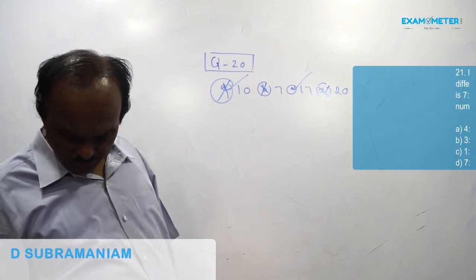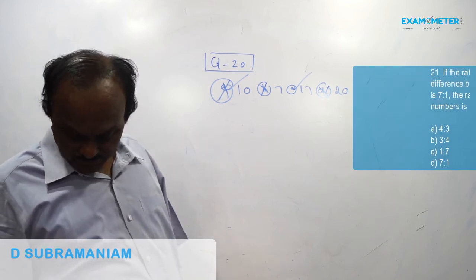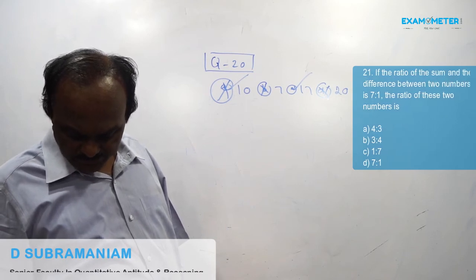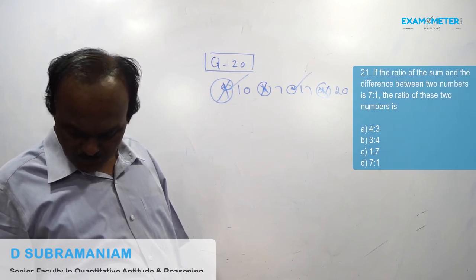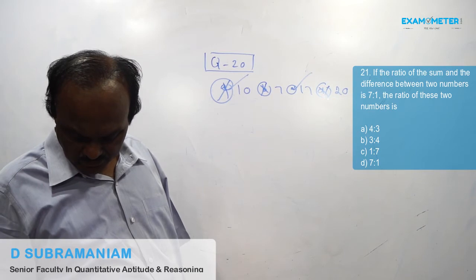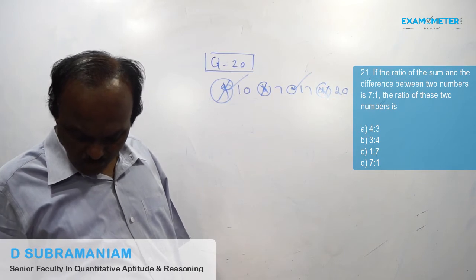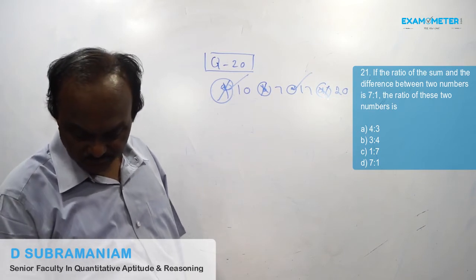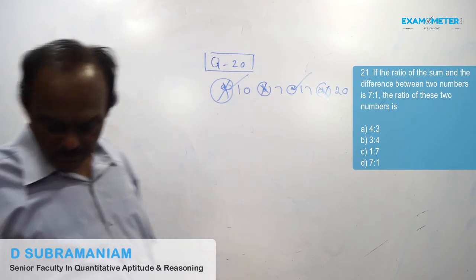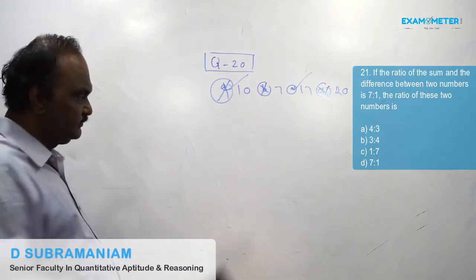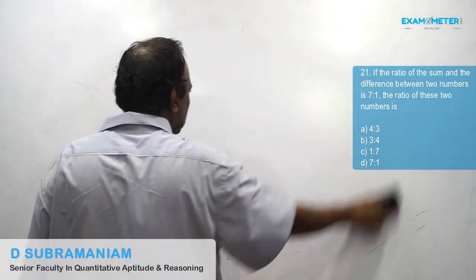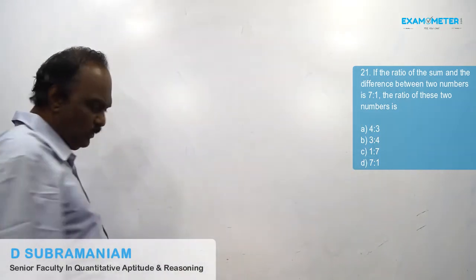Question number 21: If the ratio of the sum and the difference between two numbers is 7 to 1, what is the ratio of these two numbers?